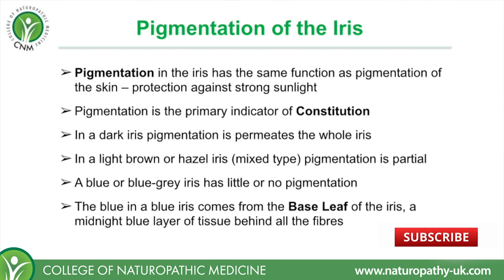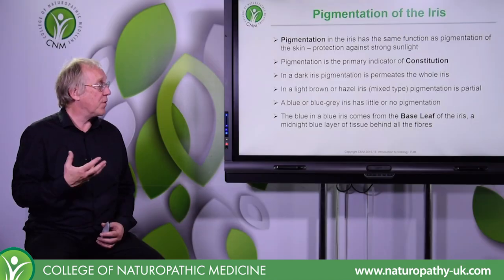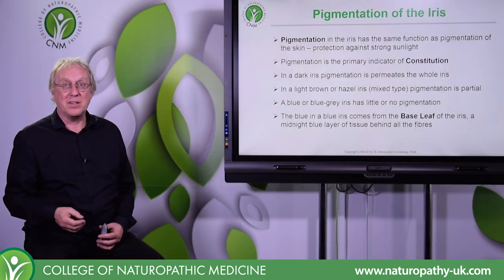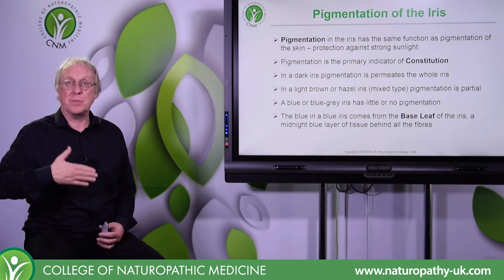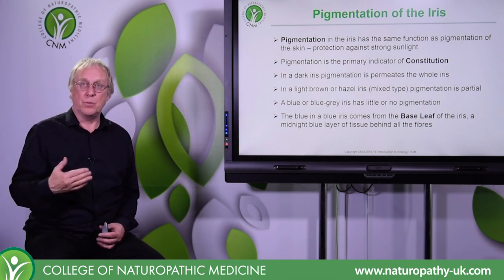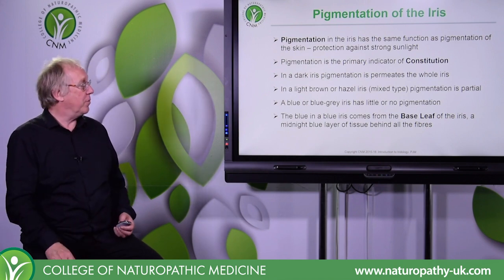In a dark iris, the pigmentation permeates the whole iris. In a light brown or hazel iris, the pigmentation is partial — we'll see some pictures of this in a minute. And a blue or blue-grey iris has little or no pigmentation. The blue in a blue iris comes from the base leaf or the pigmented epithelium of the iris, which is a midnight blue layer of tissue that lies behind all the fibres in that complicated structure.